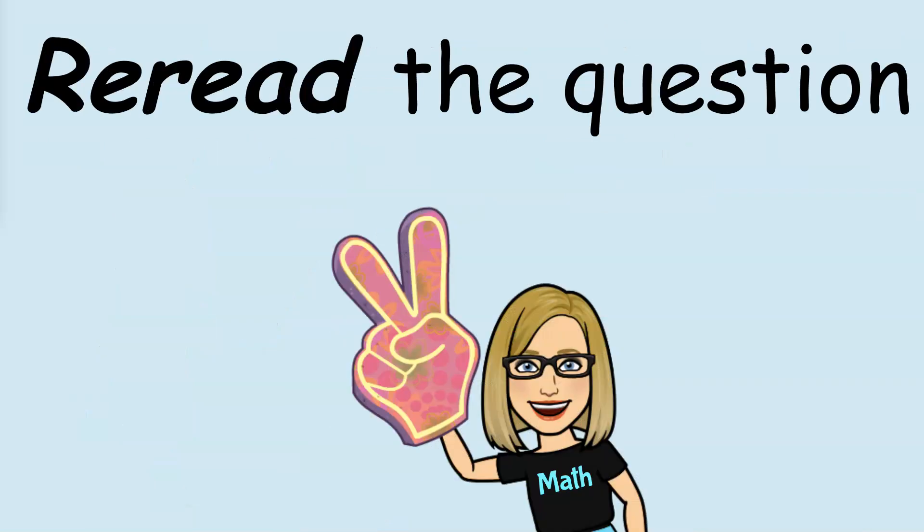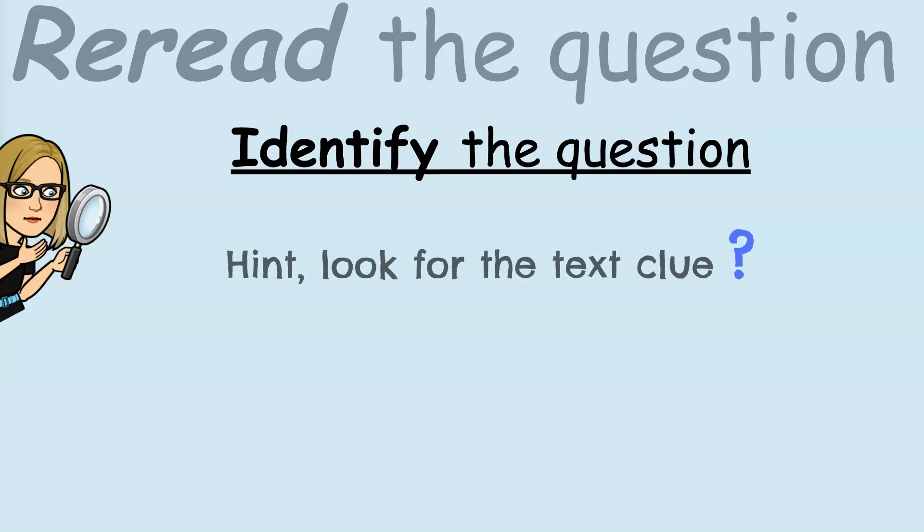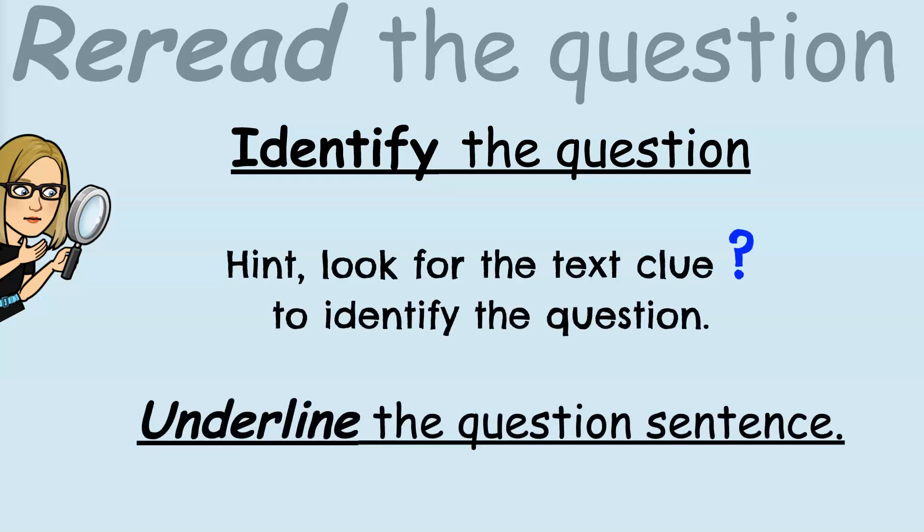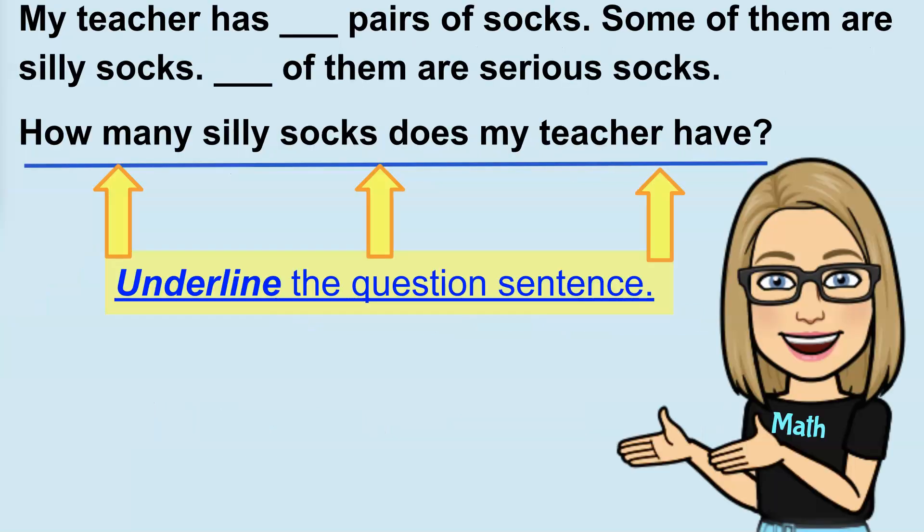Second, re-read the question. Identify the question. Hint, look for the text clue question mark to identify the question. Underline the question sentence. It's important we know exactly what question is being asked. So, you underline the question sentence to be sure you understand what information we're trying to find out. We're trying to find out how many silly socks does my teacher have?